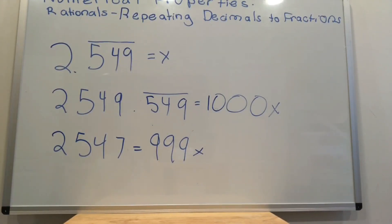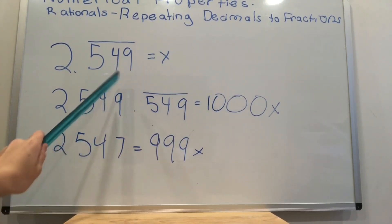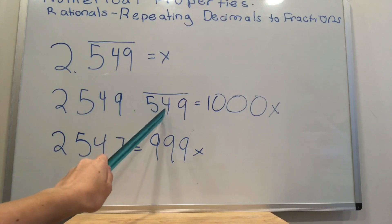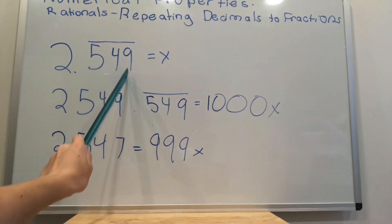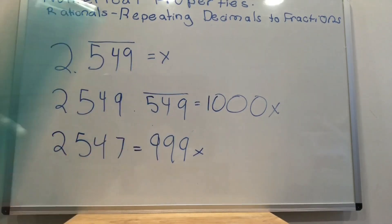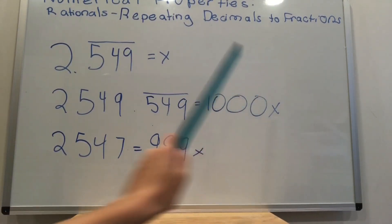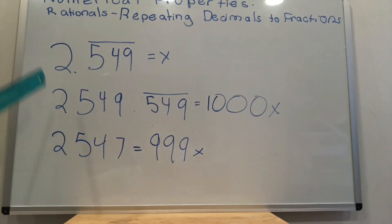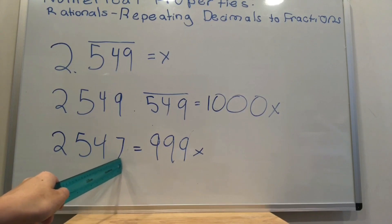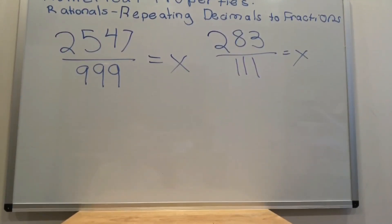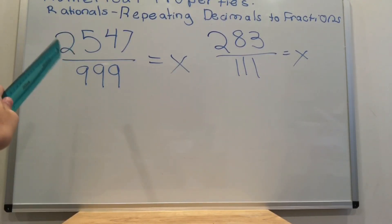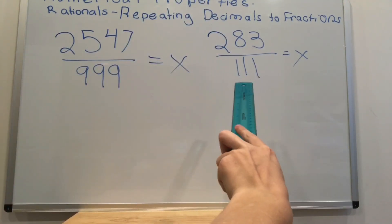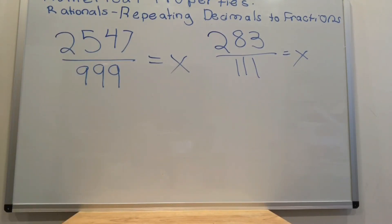How do we turn a repeating decimal into a fraction? First, we label the initial number as x. Then, we multiply it until we have the same decimal expansion on the right side of the decimal point. In this case, we need to move the decimal point three spaces because it repeats for three digits, meaning we have to multiply by 1,000. So 2,549.549 repeating equals 1,000x. Then we subtract to get 2,547 equals 999x. So we get that 2,547 over 999 equals x, which simplifies to 283 over 111. And that's how you turn repeating decimals into fractions.